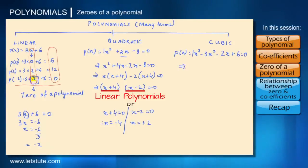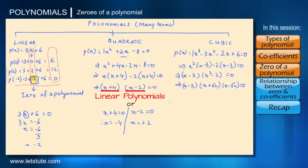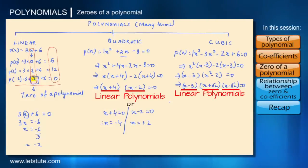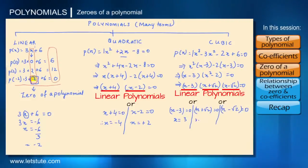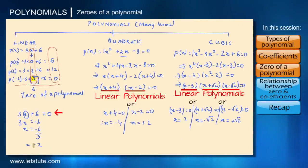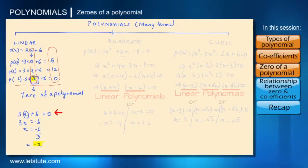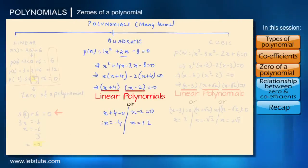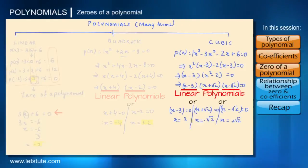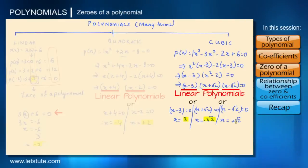In the same way, let's solve the cubic polynomial. For the cubic, we've broken it down into 3 linear polynomials. So x is equal to 3, x is equal to minus root 2, or x is equal to plus root 2. The zeros of the linear polynomial 3x plus 6 is minus 2. The zeros for quadratic polynomial x squared plus 2x minus 8 are minus 4 and plus 2. And for this cubic polynomial, the zeros are 3, minus root 2, and plus root 2.